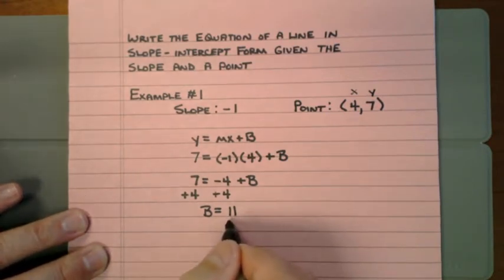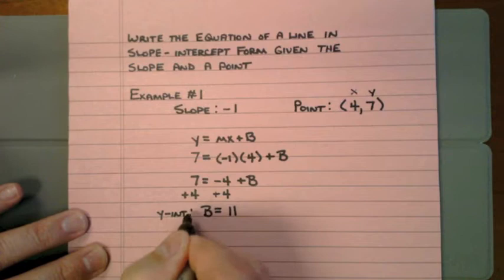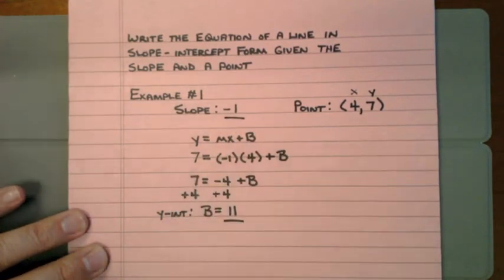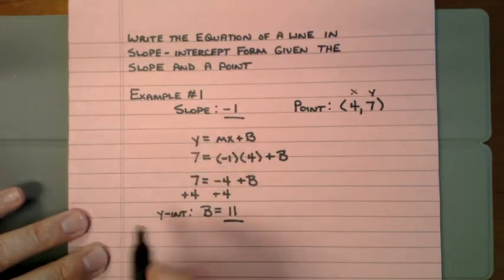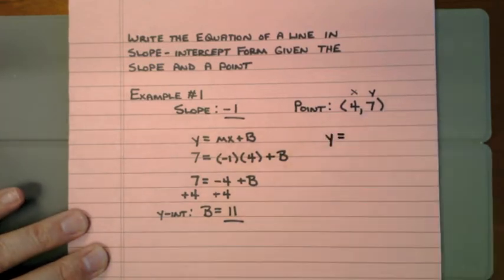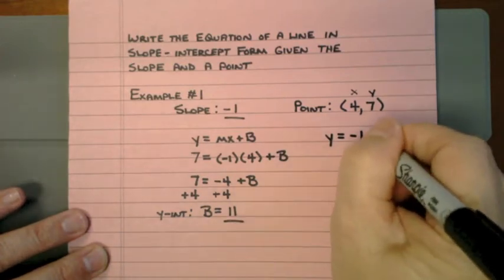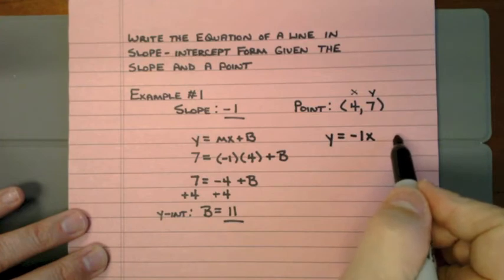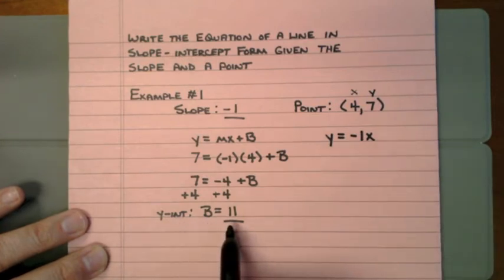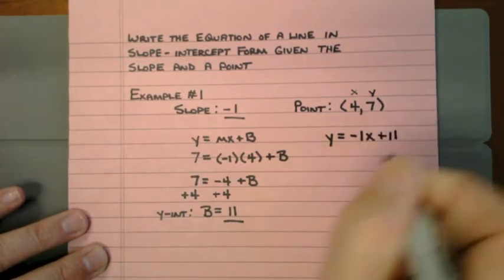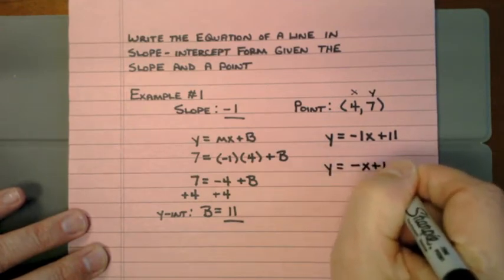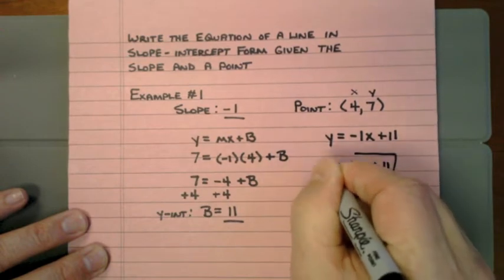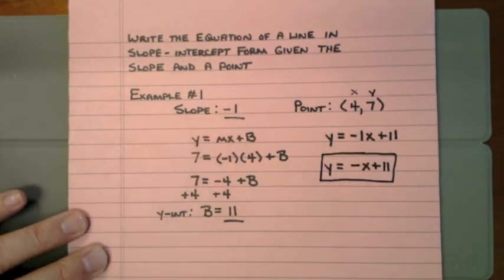I've got the two pieces of information I need. I've got my y-intercept and my slope. I simply put those two pieces back into the formula. The equation of a line starts with y is equal to, then you write the slope, which is negative 1, put an x beside it, then add the y-intercept. Since the coefficient is negative 1, I don't have to write the 1 — y equals negative x plus 11. That's the equation of the line through that point with that slope.